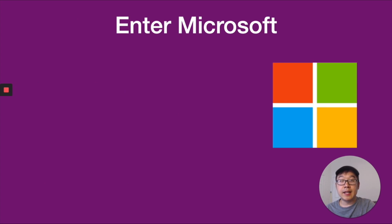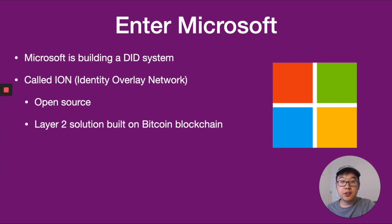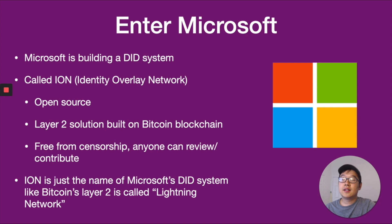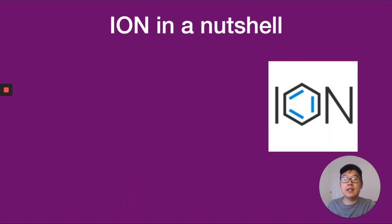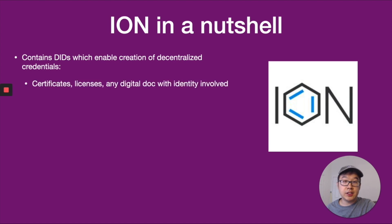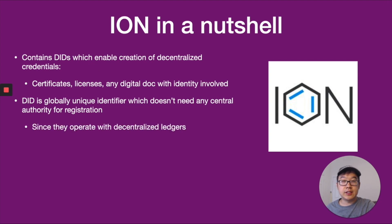Microsoft is a main player in this space. They're building one called ION, or Identity Overlay Network. It's completely open source and it's a layer two solution built on the Bitcoin blockchain — great news for Bitcoin aficionados. That makes it free from censorship, and anyone can review and contribute to the system. ION is just the name of Microsoft's system — you can think of it like Bitcoin's layer two payment network called the Lightning Network. In a nutshell, ION contains DIDs which let you create credentials like digital certificates, licenses, and any digital document with some sort of identity involved. A DID is a globally unique identifier that doesn't need any central authority for registration, since they operate with decentralized ledgers like Bitcoin's blockchain.